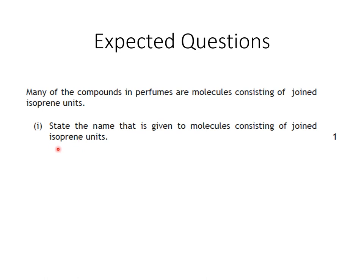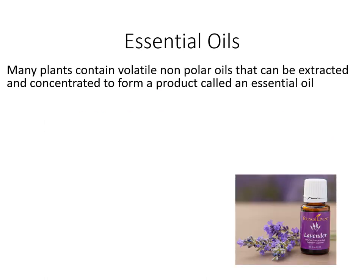The term isoprene is going to crop up again and again, so we really need to know what an isoprene unit is. In the vast majority of plants — whether it's the bark, leaf, or flower — there is what we call an essential oil. These essential oils are volatile, meaning they easily evaporate. They are non-polar oils, so they are not soluble in water. Because they're volatile, we can infer their intermolecular forces: they're unlikely to have many hydrogen bonds, more likely London dispersion forces, because they are hydrocarbons.